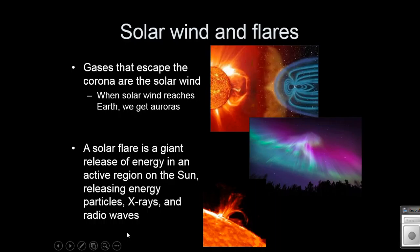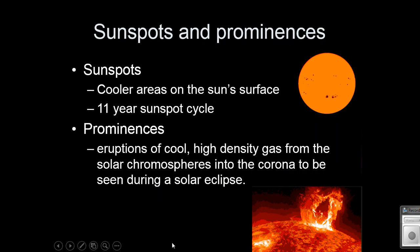Light only takes about seven minutes to get from the sun to Earth. So if it's a giant solar flare, we don't have much warning that's coming. There's really nothing we can do about it.